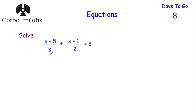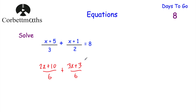In terms of our left-hand side, let's add together these algebraic fractions. We want to get a common denominator, so I'm going to choose 6. To get from 3 to 6, we multiply by 2, so we need to multiply everything on the numerator by 2 — that'll be 2x plus 10. For the other fraction, we had 2, we've now got 6, so we've multiplied by 3, giving us 3x plus 3, and it's still equal to 8. Simplifying the left-hand side: 2x plus 3x is 5x, and 10 plus 3 is 13, so we have (5x + 13)/6 = 8.